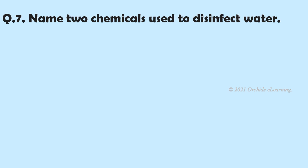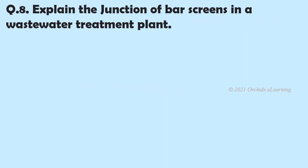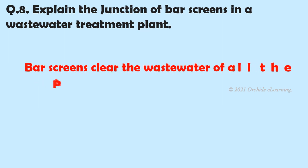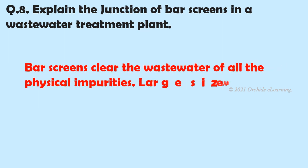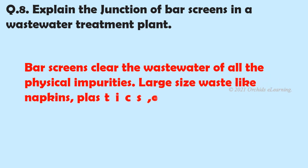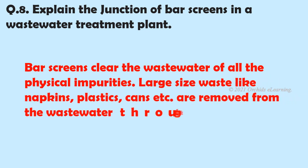Name two chemicals used to disinfect water: chlorine and ozone. Explain the function of bar screens in a wastewater treatment plant. Bar screens clear the wastewater of all physical impurities. Large-size waste like napkins, plastics, cans, etc. are removed from the wastewater through the bar screens.